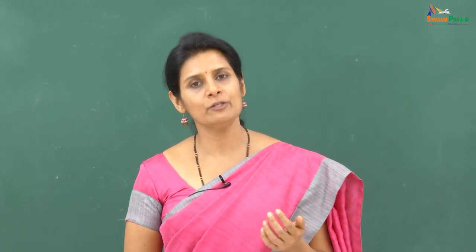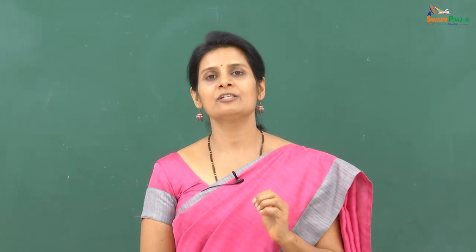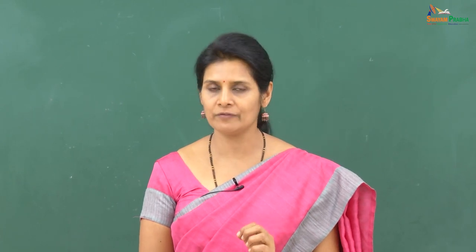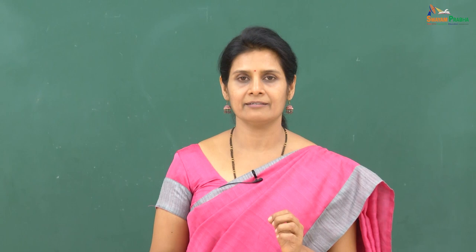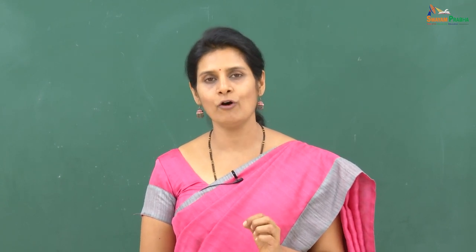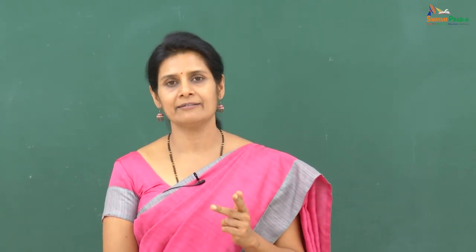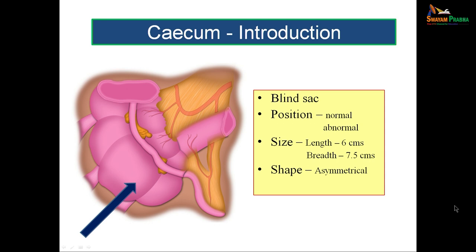The cecum is unique in that its breadth is greater than its length. The length is 6 centimeters whereas the breadth is 7.5 centimeters, making it the widest part of the large intestine. Structures with a shorter length than breadth can be remembered with the mnemonic 3PC: Pons, Prostate, Pituitary gland, and Cecum. The shape of cecum is asymmetrical, with a larger saccule on the right side and a smaller one on the left, on either side of the attachment of the tenia coli.